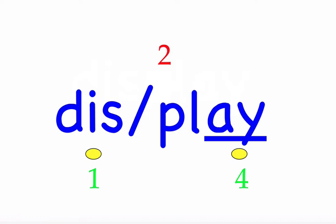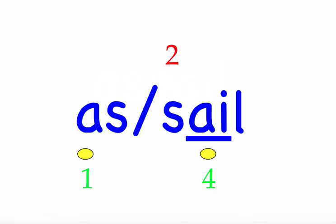The next word is 'assail.' We will assail the fortress. Not a word you hear often; for spelling pronounce it 'as-sail.' First syllable 'as' — two sounds, A-S. Second syllable 'sail' — three sounds, S-A-I-L. Mark the word. Assail.